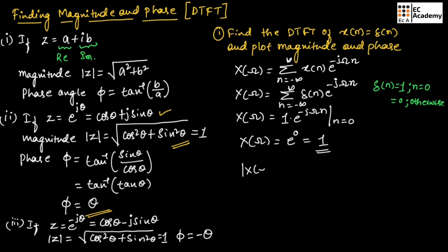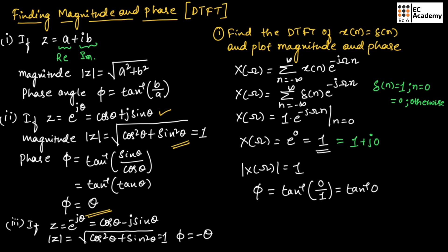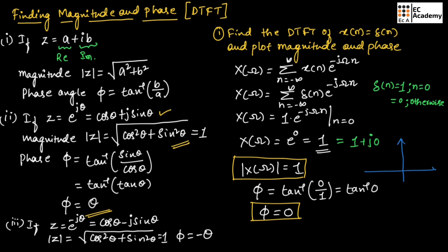So the magnitude of X(ω) = 1, and the phase angle: we can write 1 as 1 + j0, so phase = tan⁻¹(0/1) = tan⁻¹(0) = 0. We got magnitude as 1 and phase angle as 0. For the magnitude plot, taking ω on the x-axis, the magnitude of X(ω) is 1 for ω ranging from −∞ to ∞.